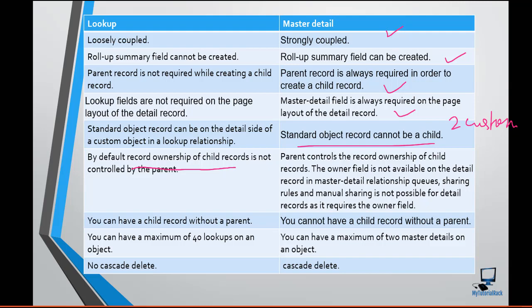But in the case of a master-detail relationship, the parent controls the record ownership of the child records. The owner field is not available on the detail record in the case of master-detail relationship. So all sharing rules and manual sharing are controlled by the parent for the child record — whatever sharing settings apply to the parent will also apply to the child record.